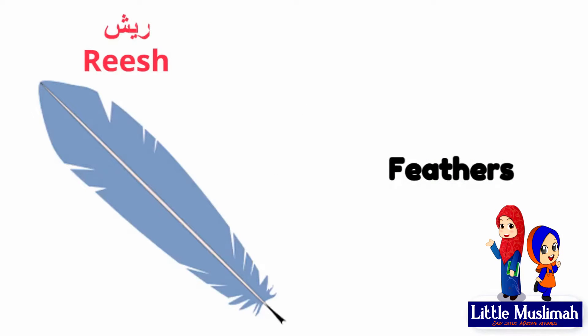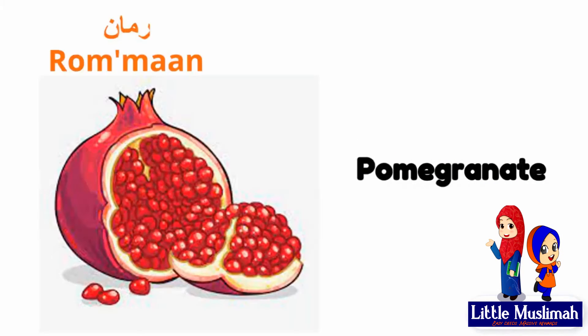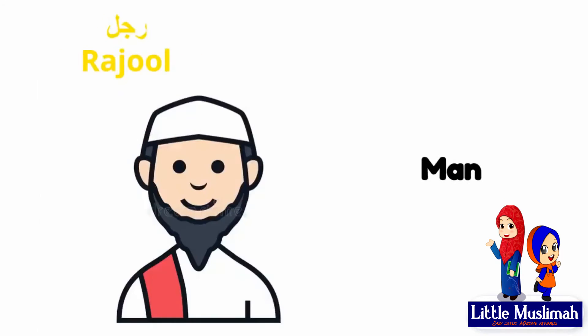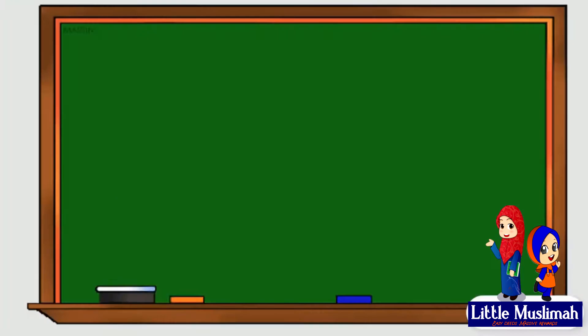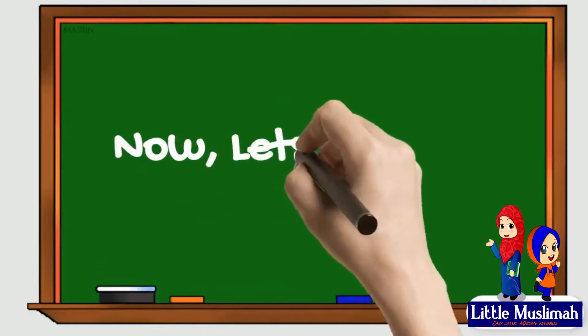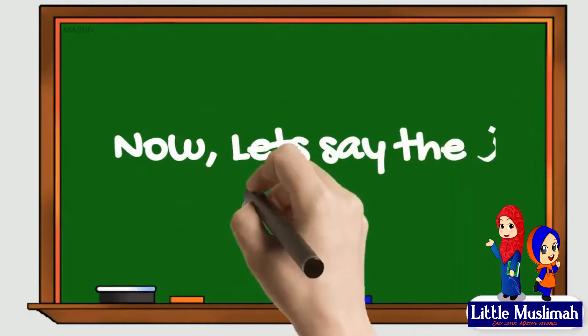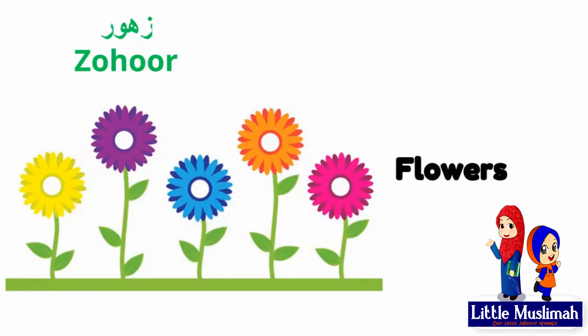Reesh — feathers. Rumman — pomegranate. Rajul — man. Now let's say the za-words.